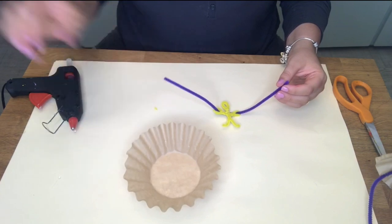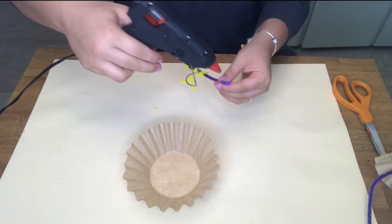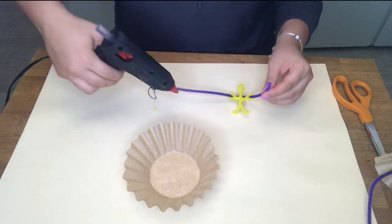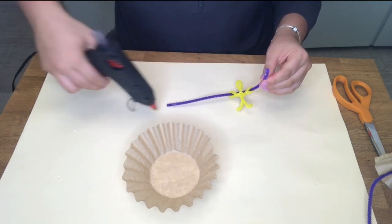So take your coffee filter and you're going to hot glue your pipe cleaner and you're going to glue it onto your coffee filter. Make sure they're on evenly.